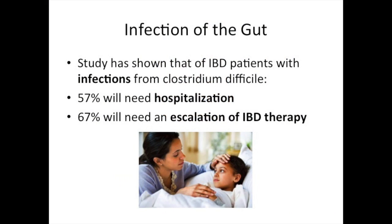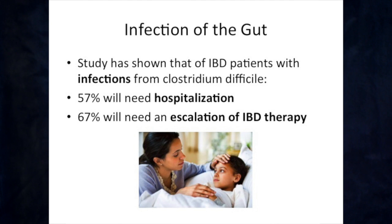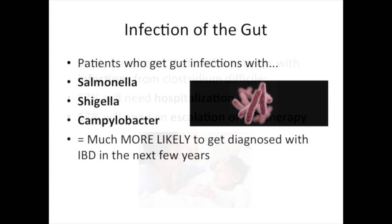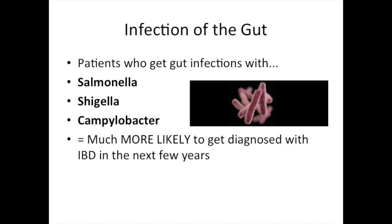We do not have a clear explanation for what causes most flares. However, we do know of several factors that can cause flares. The first is infection of the gut. A study in children with IBD has shown that in IBD patients who have infections with Clostridium difficile, 57% will need hospitalization and 67% will require an escalation of IBD therapy in the next six months. We also know that patients who get gut infections with bacteria like Salmonella, Shigella, or Campylobacter are much more likely to be diagnosed with IBD in the next few years.